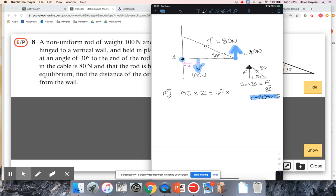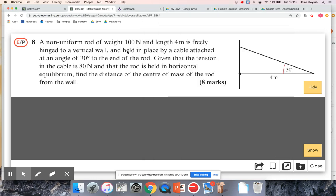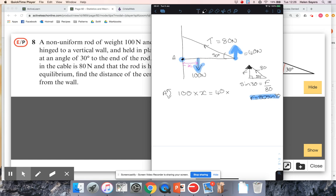Times a distance of, well the beam is four meters long, so times the distance of four. So 100x is 160, so x is 1.6 meters.